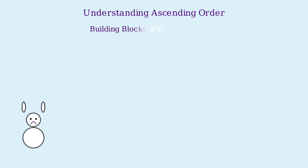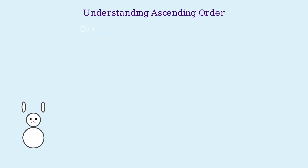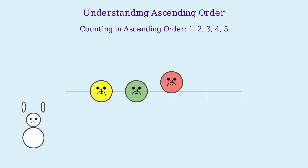Here's another example with building blocks. We arrange them from shortest to tallest, just like ascending order with numbers. Now let's see the most basic example of ascending order — counting from one to five. Watch as our number friends hop into place from smallest to largest.